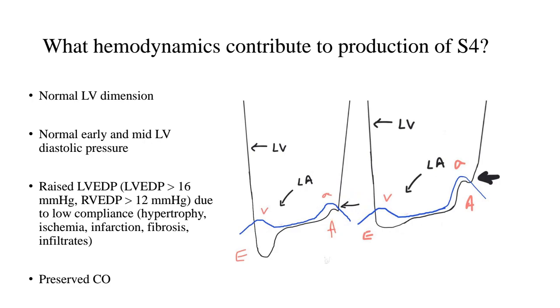Now, what leads to this raised LV or RVEDP? Anything which compromises the compliance of these ventricles and the causes can be manifold. There can be hypertrophy, ischemia, infarction, fibrosis, infiltrates. So all these reasons lead to decrease in the compliance or decrease in the distensibility of that ventricle and as a result, the LVEDP or the RVEDP rises. But the early part and the mid part of the diastolic pressures in the LV pressure tracing remains the same or it basically remains normal.